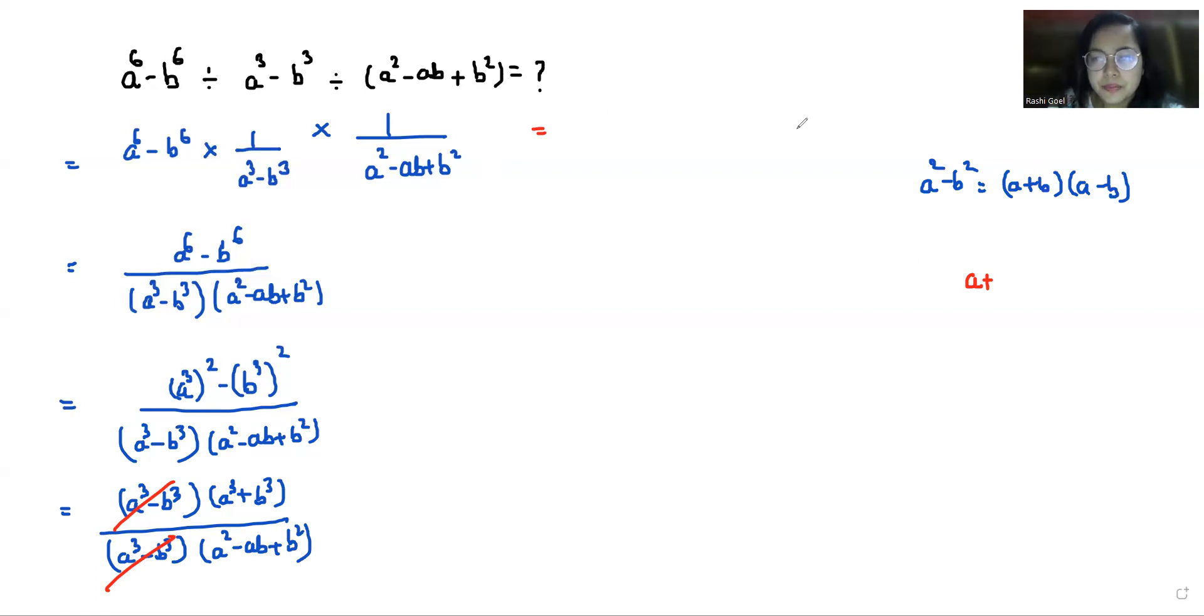which is (a + b)(a^2 - ab + b^2), I'm going to replace the numerator with (a + b)(a^2 - ab + b^2) by a^2 - ab + b^2.